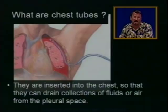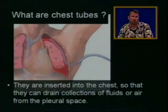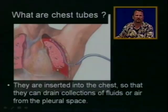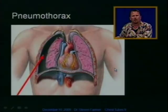Sometimes that pleural space can get filled up with air, blood, or pus, and we need to use a chest tube to drain that pleural space. Here's a picture of a chest tube in the pleural space — we see blood in the pleural space, and that's the lung right there.